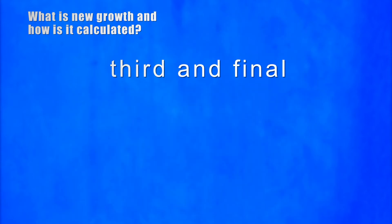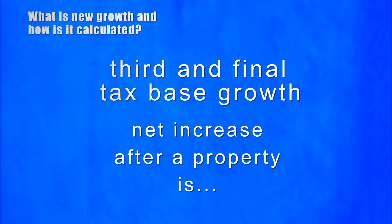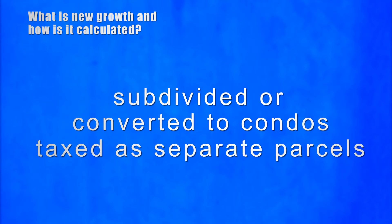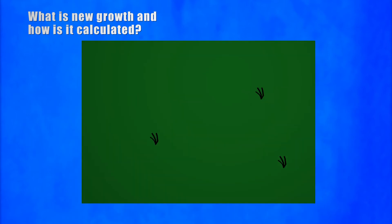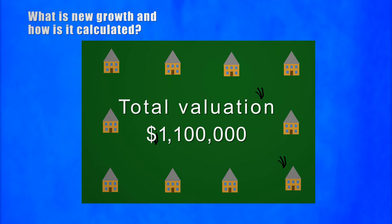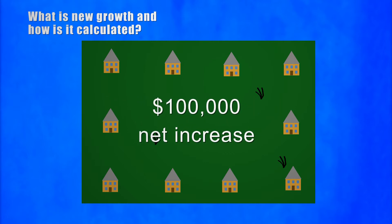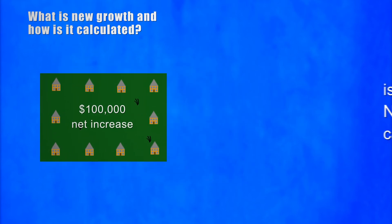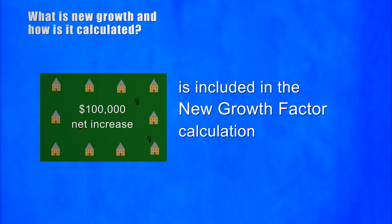The third and final category of tax-based growth is the net increase in the community's assessed valuation that results when property is subdivided or converted to condominiums and taxed as separate parcels. For example, Parcel D is a 20-acre site of vacant land that was assessed as a single parcel for $1 million last year. A subdivision plan has been approved for the site, creating 10 two-acre house lots assessed as 10 separate parcels this year. Under the assessor's land valuation schedule, the total valuation of the 10 lots ends up being $1,100,000 — a $100,000 net increase. That $100,000 in added value due to the subdivision is included in the calculation of the community's new growth factor.